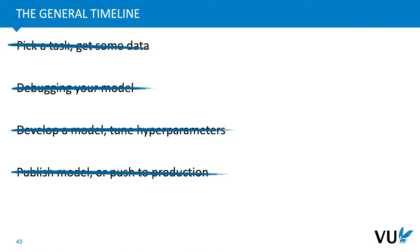That brings us to the end of the general timeline. In the next video, we'll dig deeper into the question: why does deep learning actually work? How is it that with such a simple algorithm as gradient descent combined with backpropagation, we can train networks of millions and even billions of parameters?